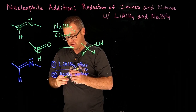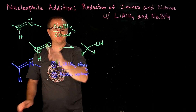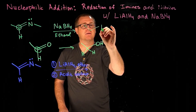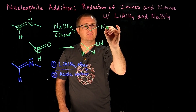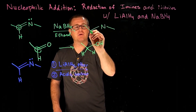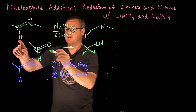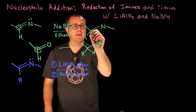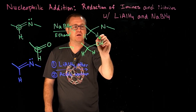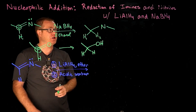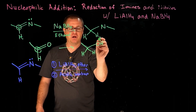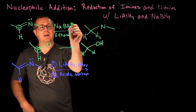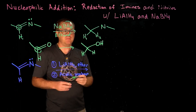The product for this top green reaction would look like this. The green hydrogen is labeled hydrogen one, and then we've added a second hydrogen, labeled hydrogen two. That hydrogen two is coming from the hydride.